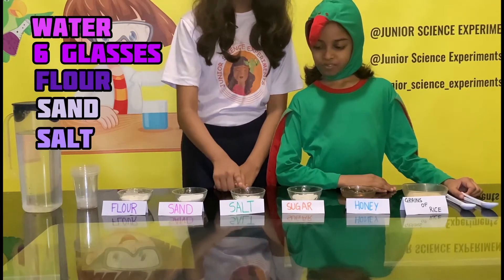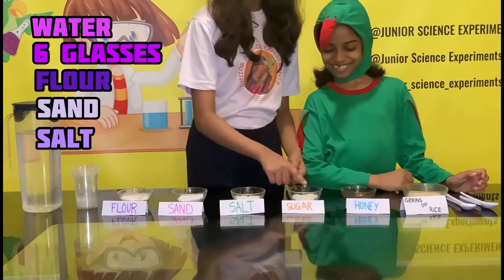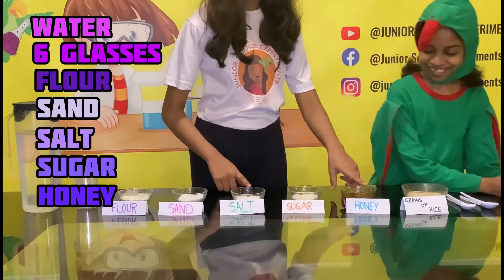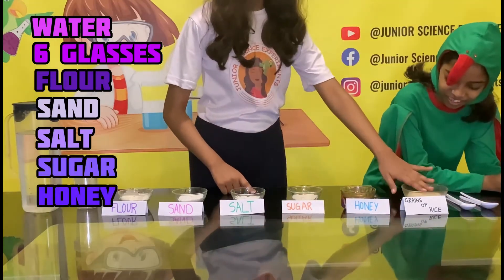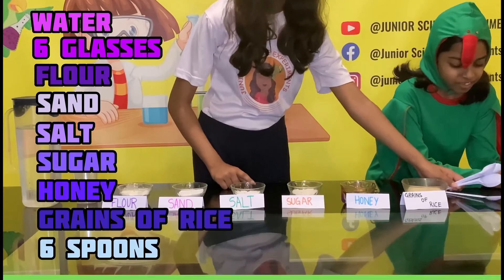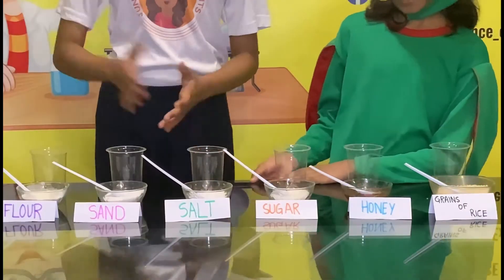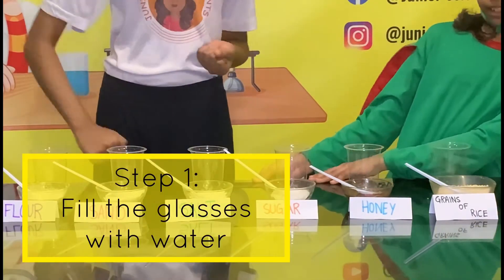We also have salt, sugar, honey, grains of rice, and six spoons. Step one: fill the glasses with water.